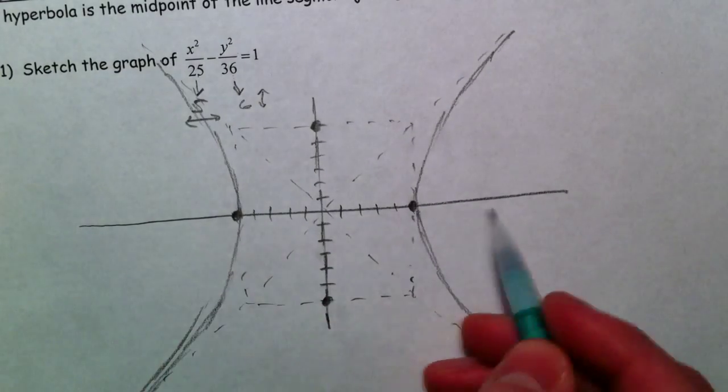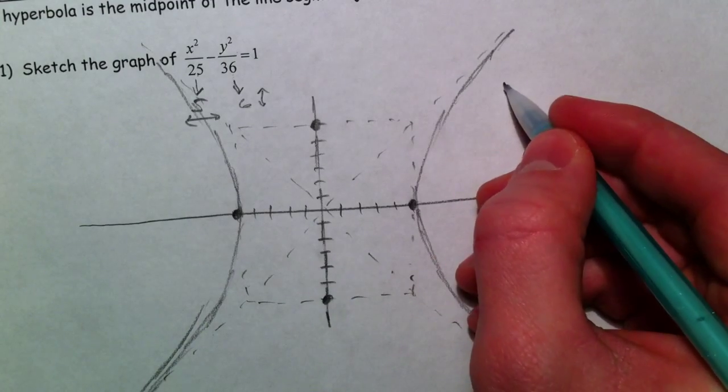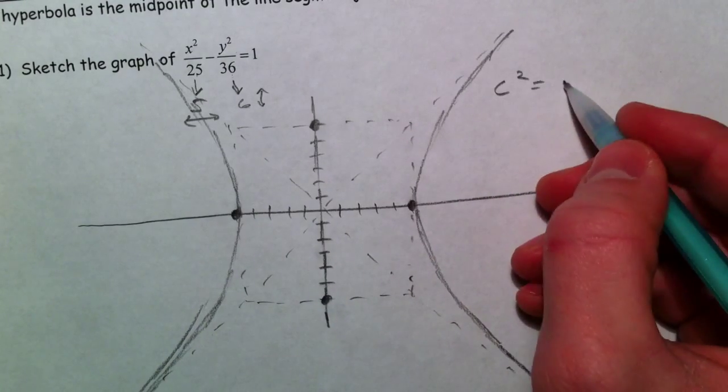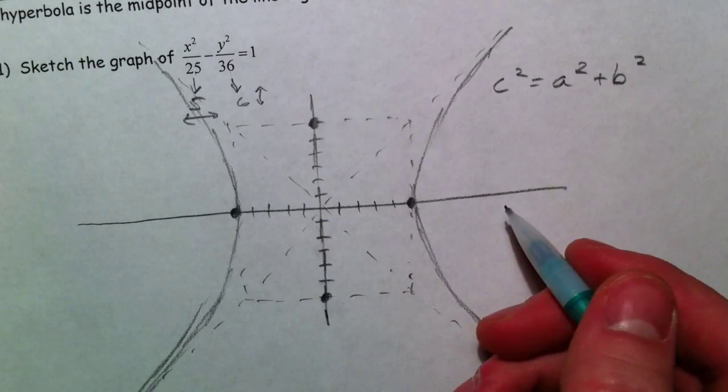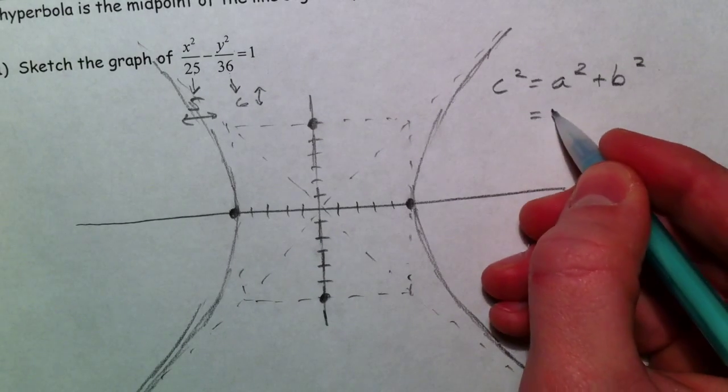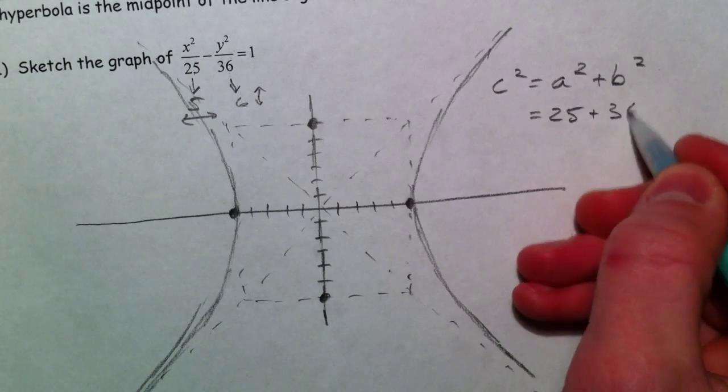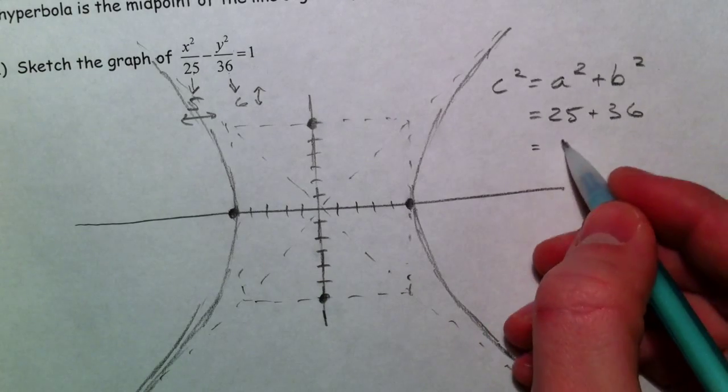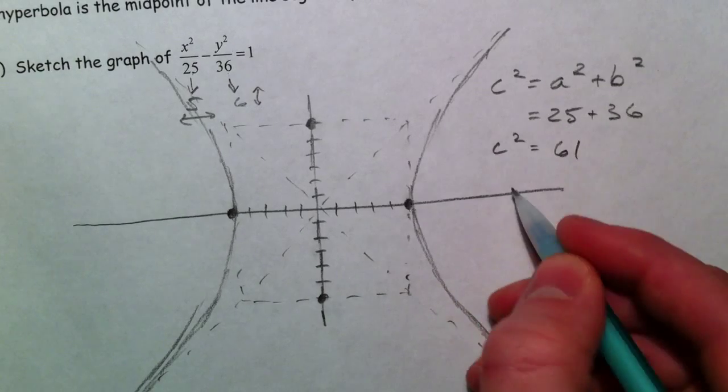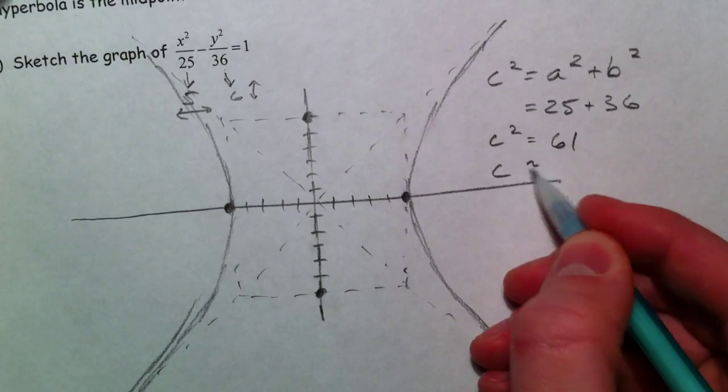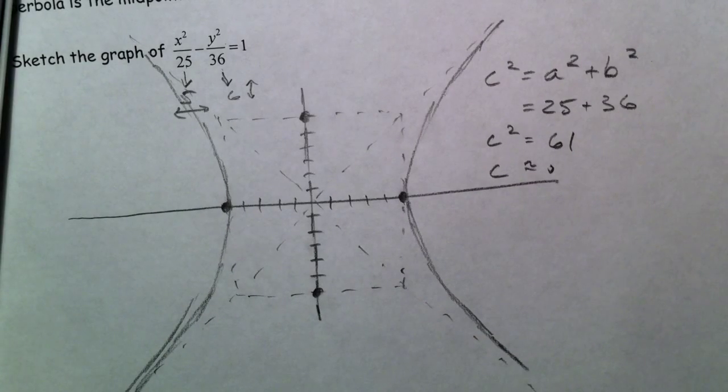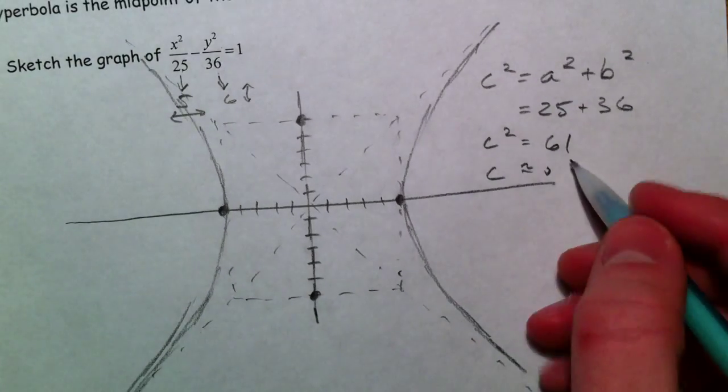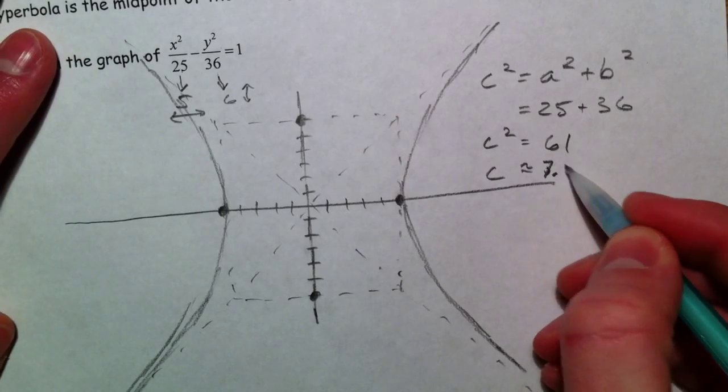It's going to have two foci out here and here, and that's going to be related by that c-squared equation, except now it's going to be a-squared plus b-squared, because it's going to be further out. So 25 plus 36 is 61. And c is about the square root of 61, 7.8, approximately.